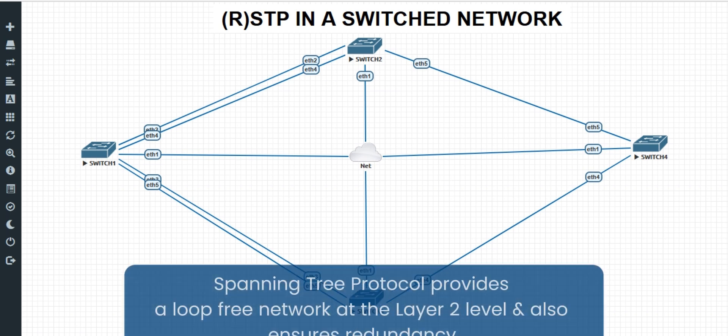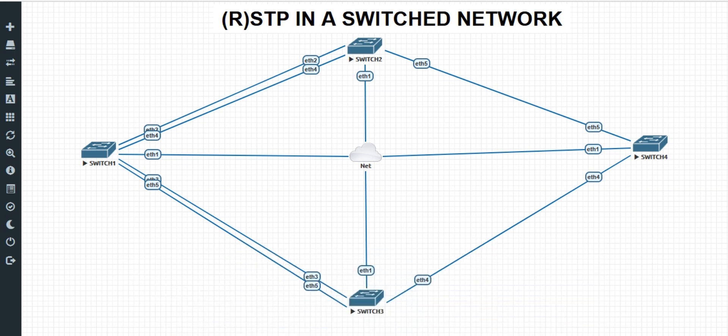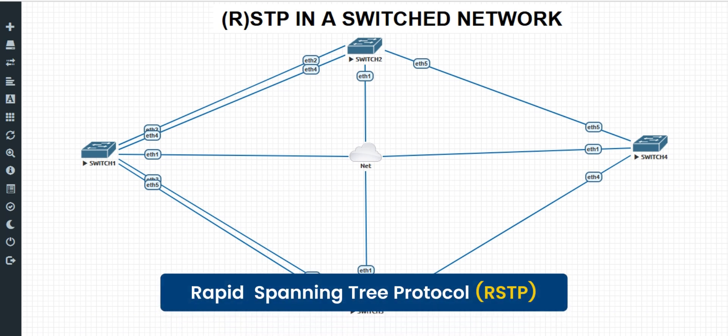STP provides a loop-free network particularly at the layer 2 level, also ensuring that there is redundancy. For the purpose of this video, we will be making use of MikroTik devices to implement STP. In addition, there is an enhanced version of STP known as RSTP, which is Rapid Spanning Tree Protocol.